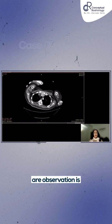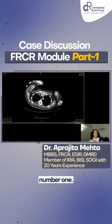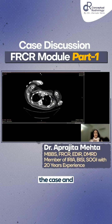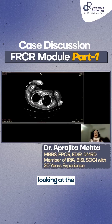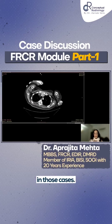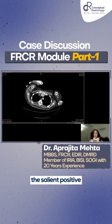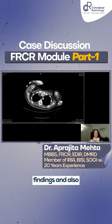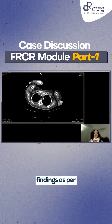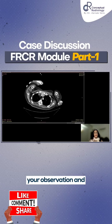What are those steps? Those steps are: observation is number one. Observation is looking at the case and looking at the salient positive findings in those cases. Going through the set of images, looking at the salient positive findings and also the relevant negative findings as per that case. That is your observation.